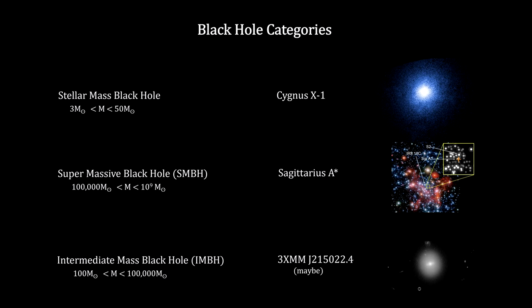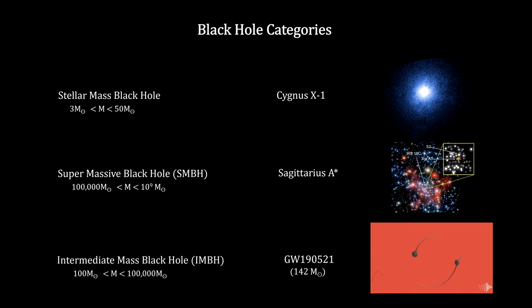We pointed out that, to date, there has not been a single confirmed discovery of a black hole in this range. So, with 142 solar masses, this event represents the first direct evidence of the existence of such objects.